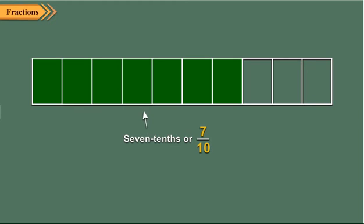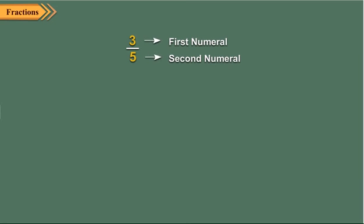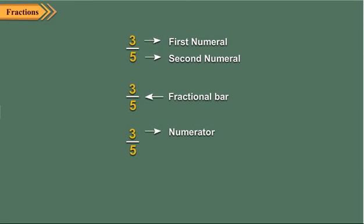So children, we observe that a fraction is a number that names one or more equal parts of a whole or a region. A fraction has two numerals, separated by a small horizontal line called the fractional bar. The numeral above the bar is called the numerator, and the numeral below the bar is called the denominator. The denominator tells us into how many equal parts a whole has been divided, and the numerator tells us how many equal parts of the whole are shaded or taken into consideration.